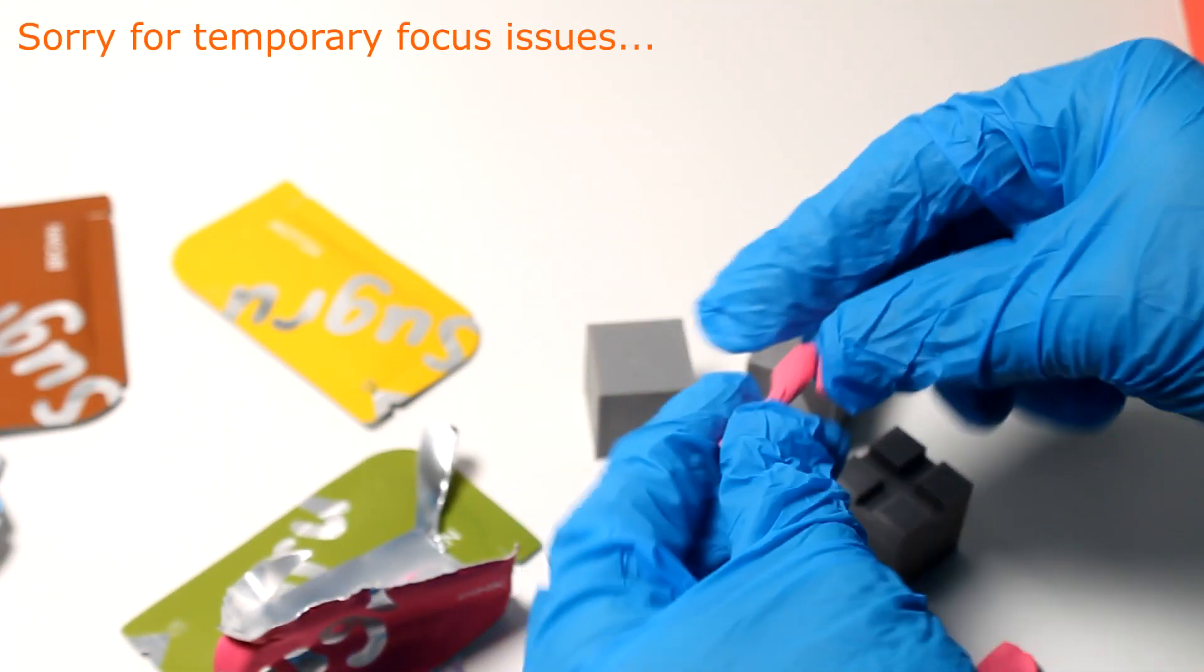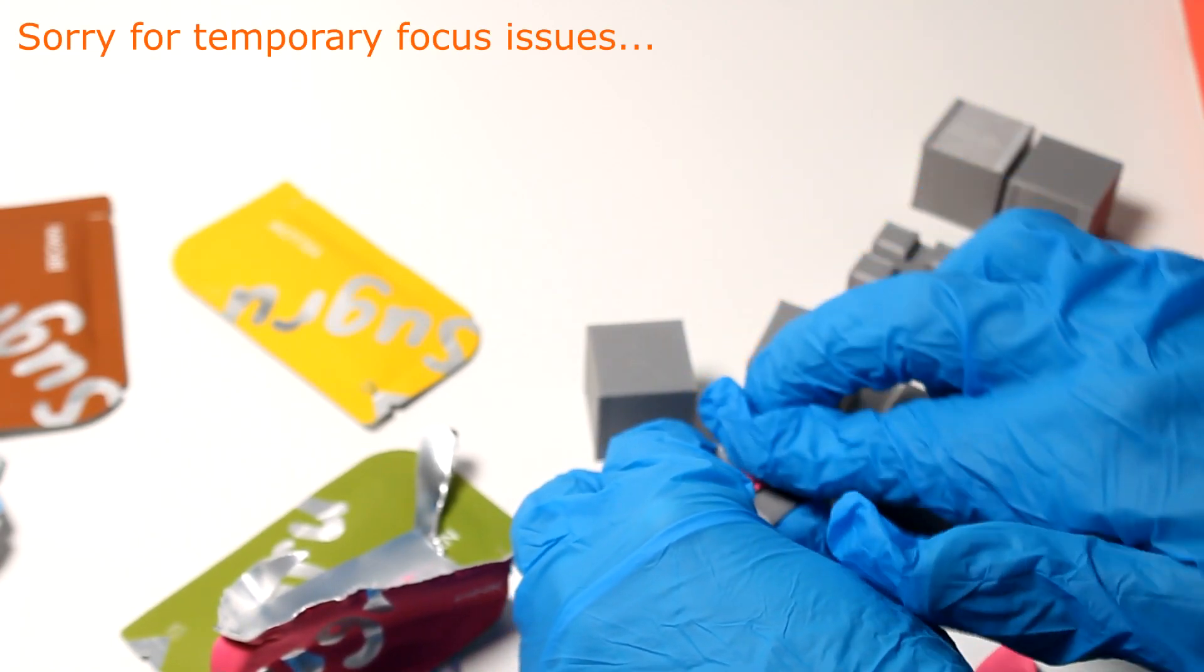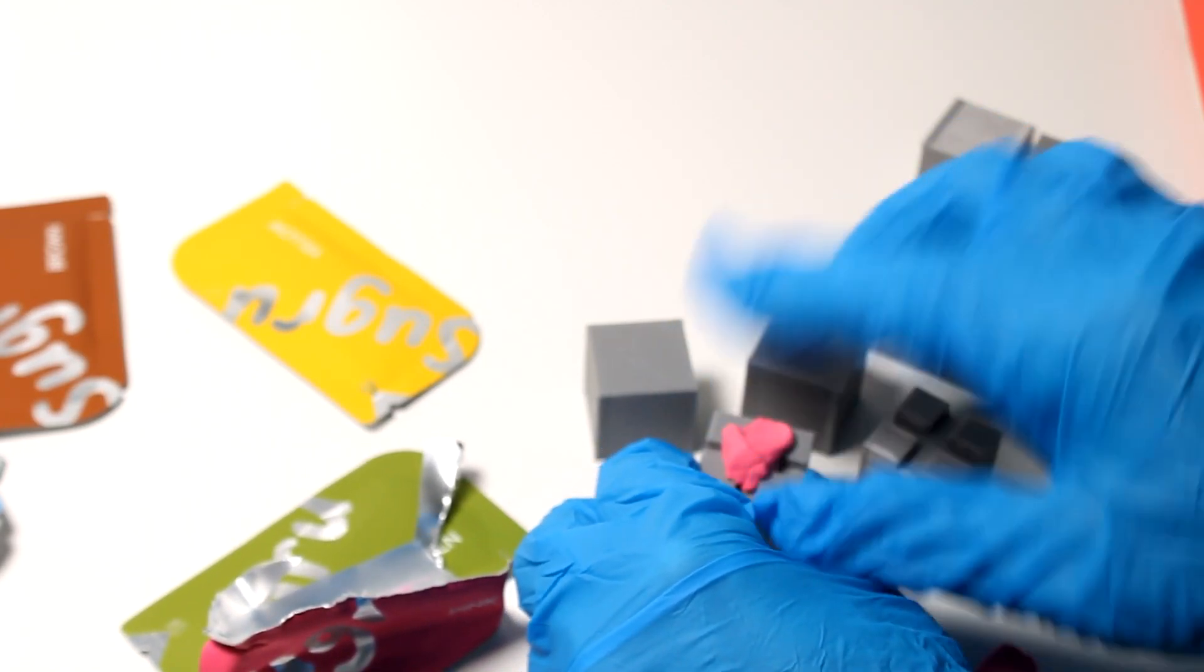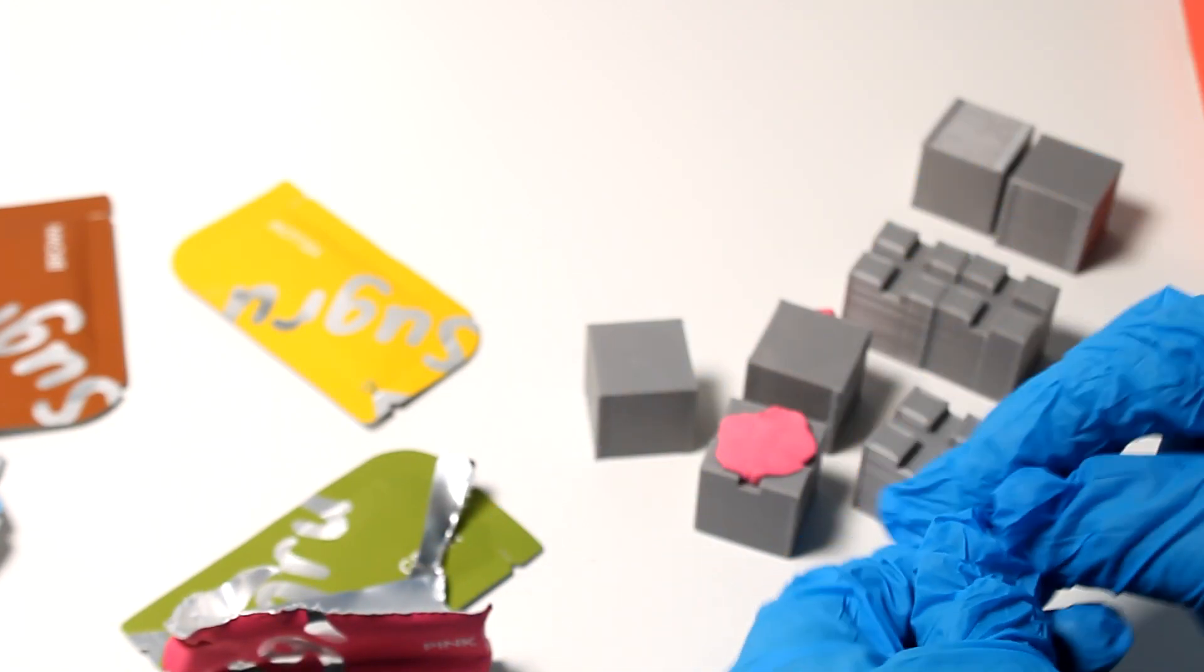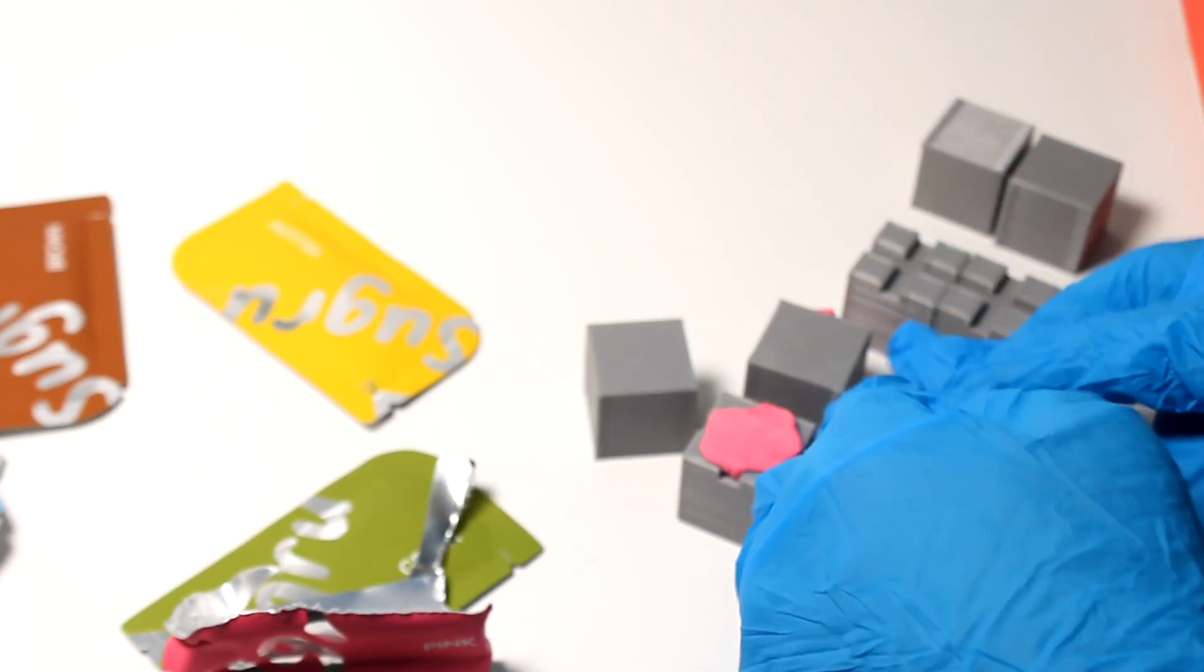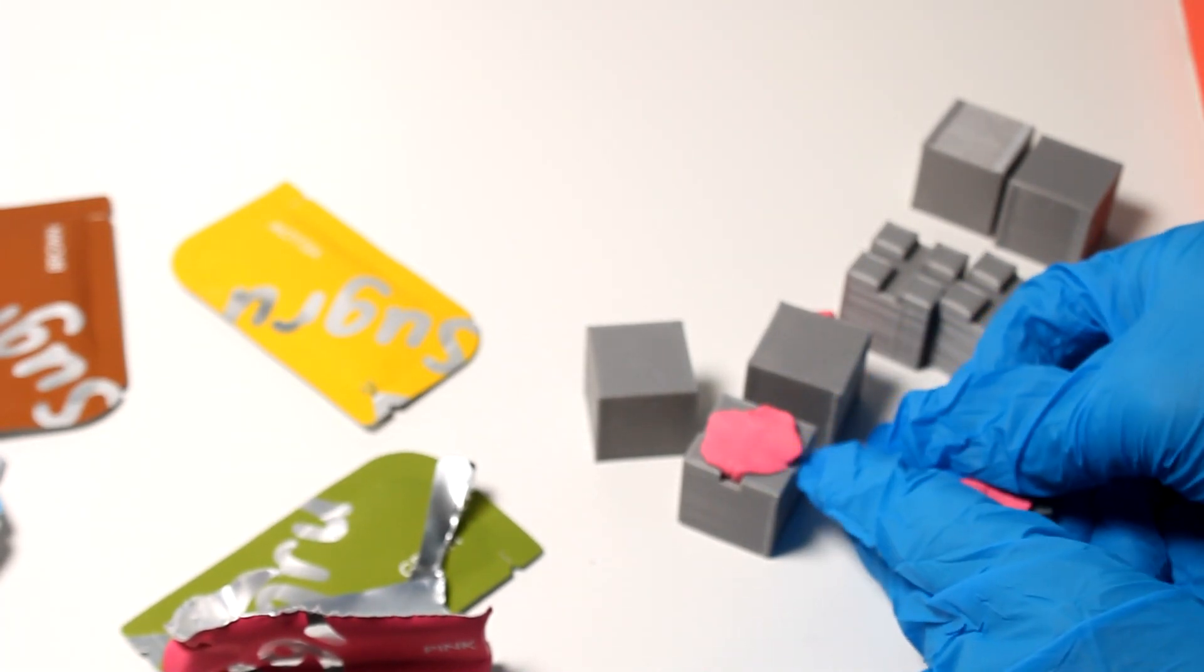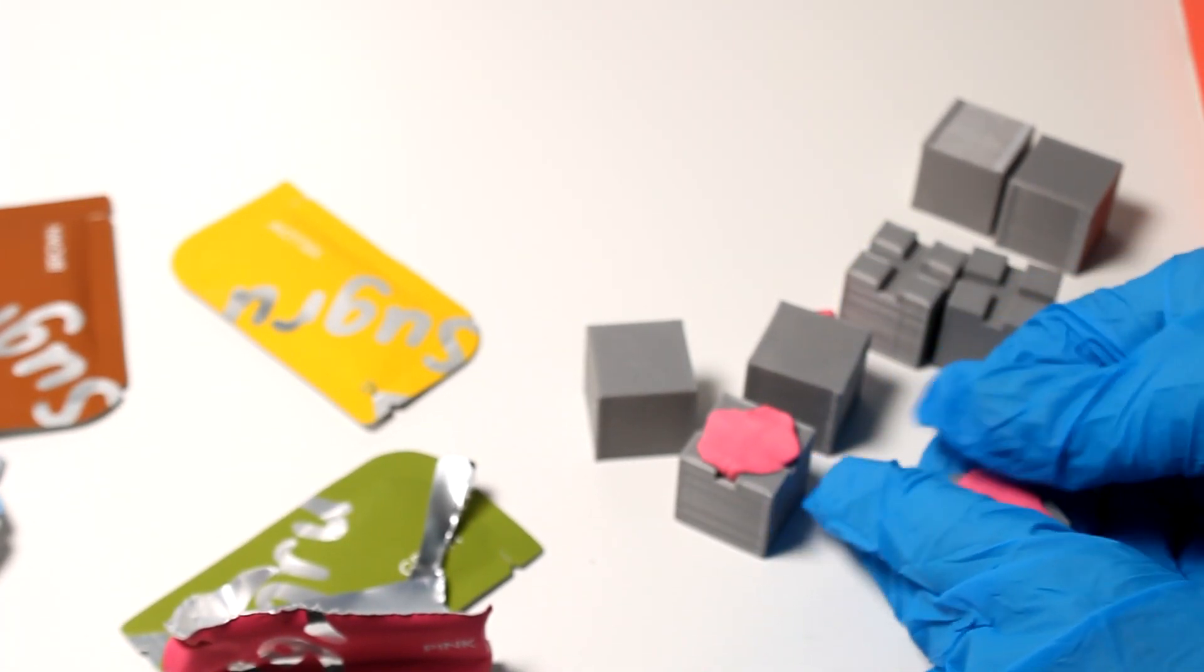I simply spread out the Sugru and stick the cubes together. It's very easy to work with using gloves because it doesn't stick to them at all, rolling it to a sausage shape helped with the indentations in the cubes. You have about half an hour to work with Sugru before it sets a little, but to fully cure it's recommended to wait at least 24 hours.